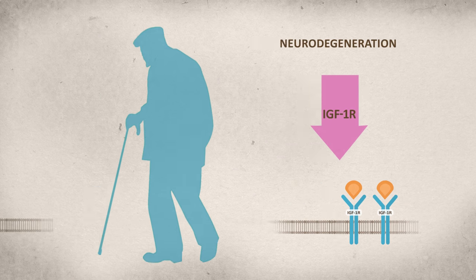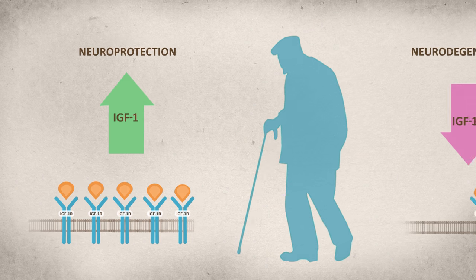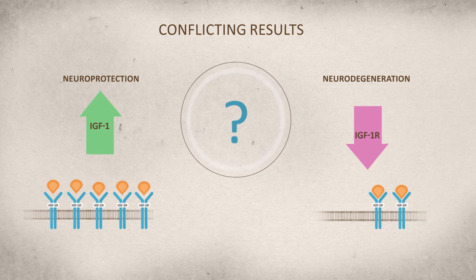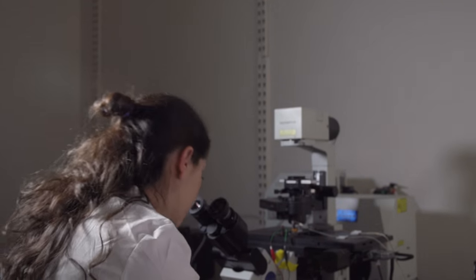However, other studies show that injections of IGF-1 can promote neurogenesis and delay cognitive deficits. Given this conflict, we understood that we had to investigate first what is the physiological role of IGF-1 receptor in the hippocampus, which is especially vulnerable to Alzheimer's disease.